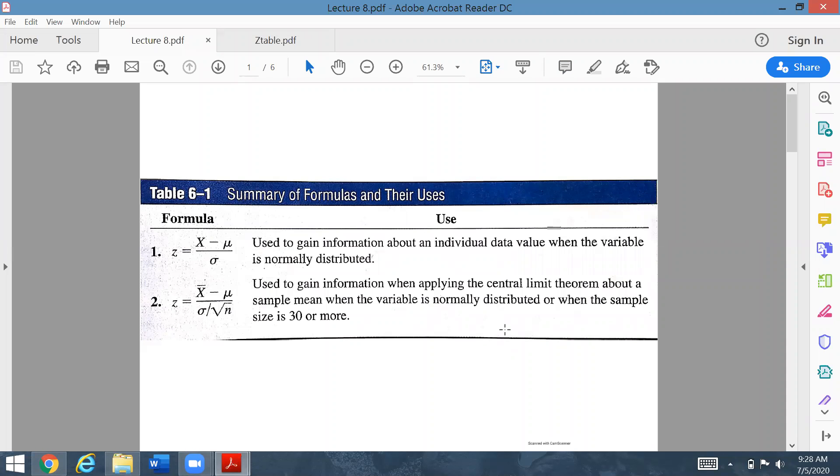Okay gentlemen, in front of you on the screen is the summary of the formulas and their uses. Last time we studied formula number one, that was z equals x minus mu upon sigma. This formula is normally used to gain information about an individual data value when the variable is normally distributed.